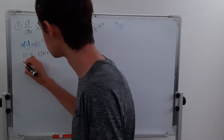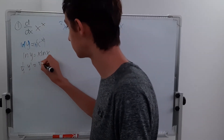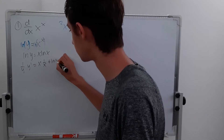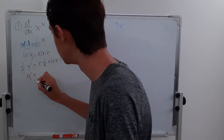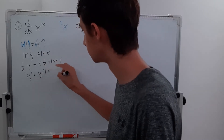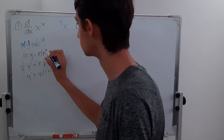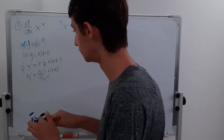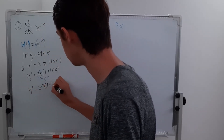This is just what we did last time. So 1 over y times y prime equals x times the derivative of the natural log, which is 1 over x, plus ln x times the derivative of x, which is 1. Isolating y prime, we multiply by y. So x times 1 over x is just 1, plus ln x. And we know y equals x to the x, so y prime equals x to the x times (1 + ln x).